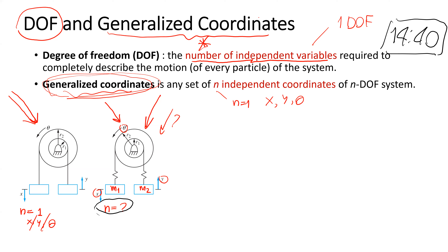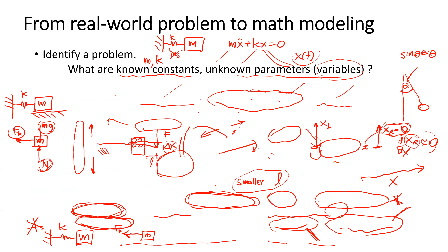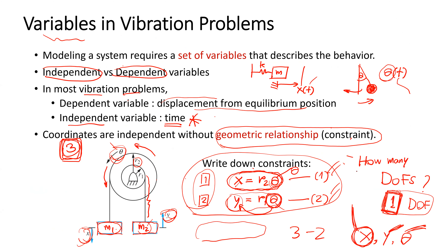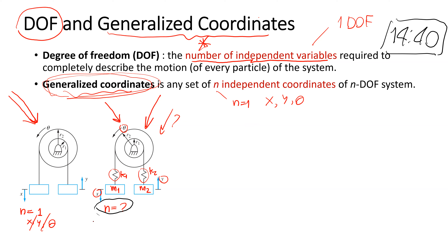In this case, the special thing increased from the previous problem is here we have the spring. We cannot say that X equals R2·theta — we cannot say that. We cannot say Y equals R1·theta. We cannot write down this constraint equation anymore.